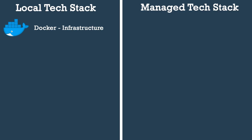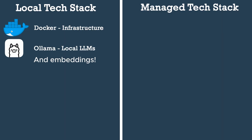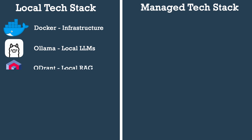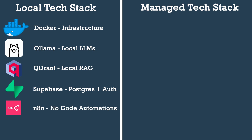Starting with the local tech stack: first is Docker, which is super important to guarantee a sound infrastructure when self-hosting everything. Next is Ollama for the large language model, which can host a wide variety of LLMs such as Llama 3.1 70B. Then Qdrant for the vector database, Supabase self-hosted for authentication and Postgres — with PGVector as an extension if you want to use that for RAG instead of Qdrant — N8N for no-code workflow automations, and Redis for caching.